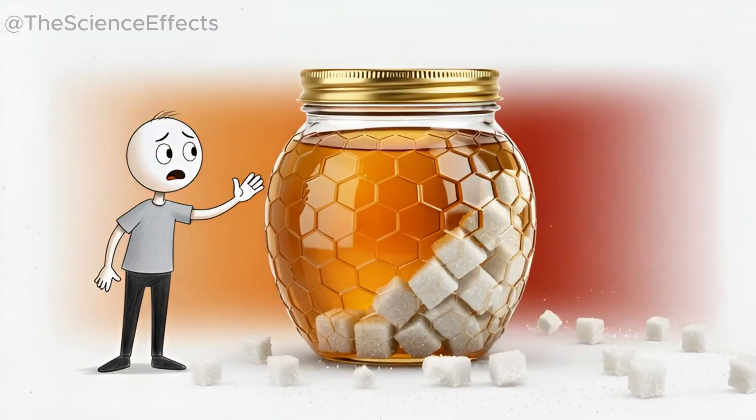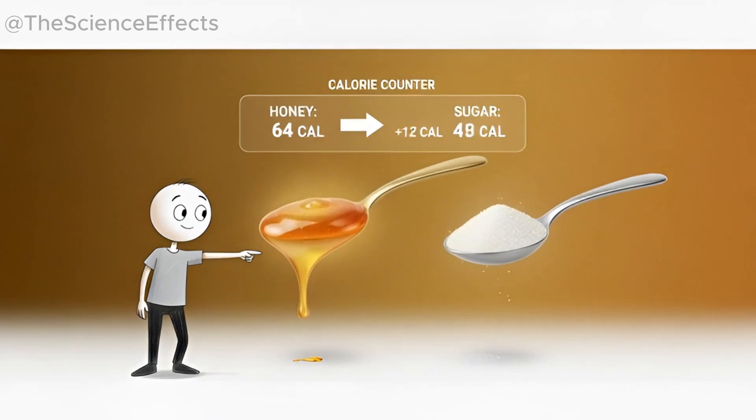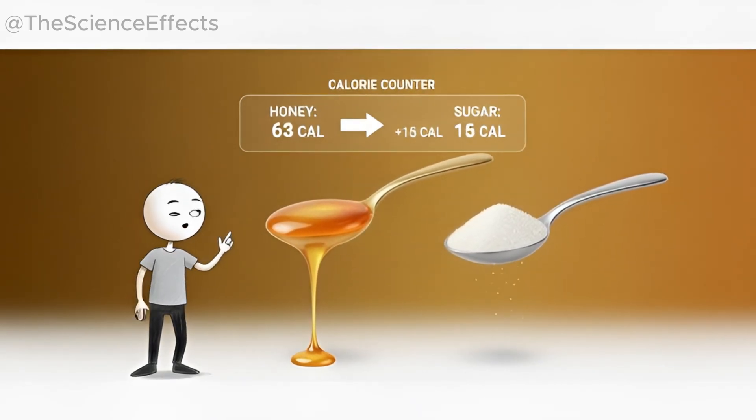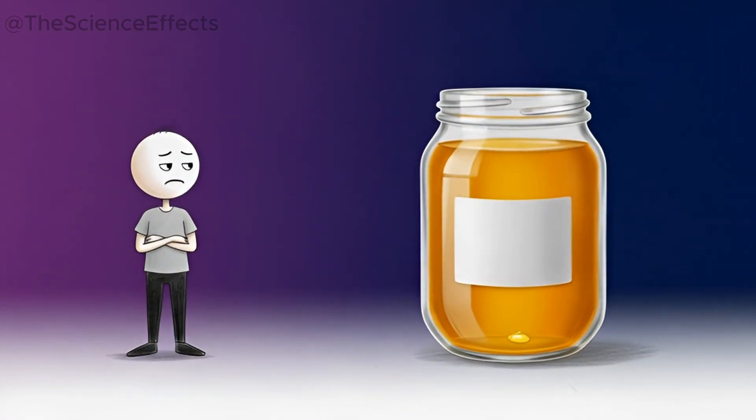But, let's be perfectly clear, this does not make honey a health food. It is still sugar. A tablespoon of honey actually has more calories and more sugar than a tablespoon of table sugar. The benefits we're talking about are marginal. They're real, but they are small. Honey isn't some magic fix for your health. It's a slightly better choice in a diet that strictly limits all added sugars.